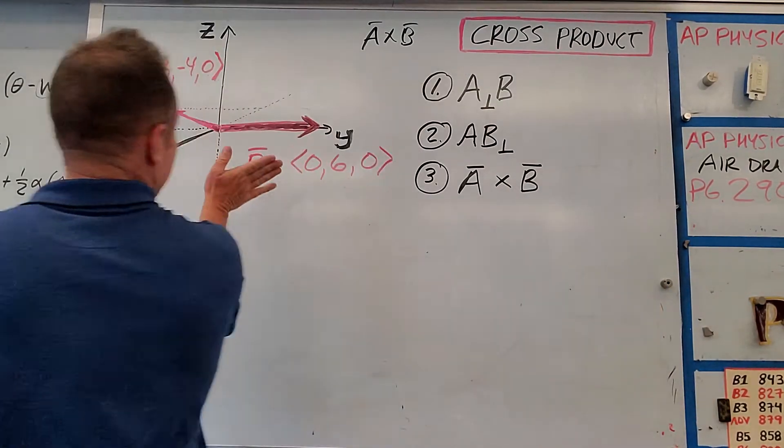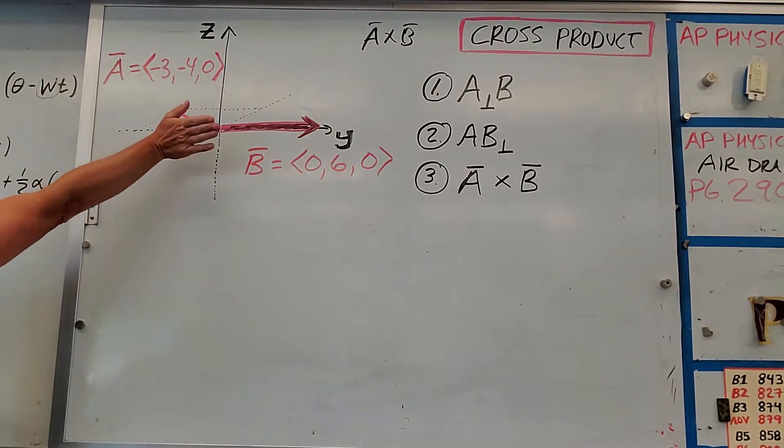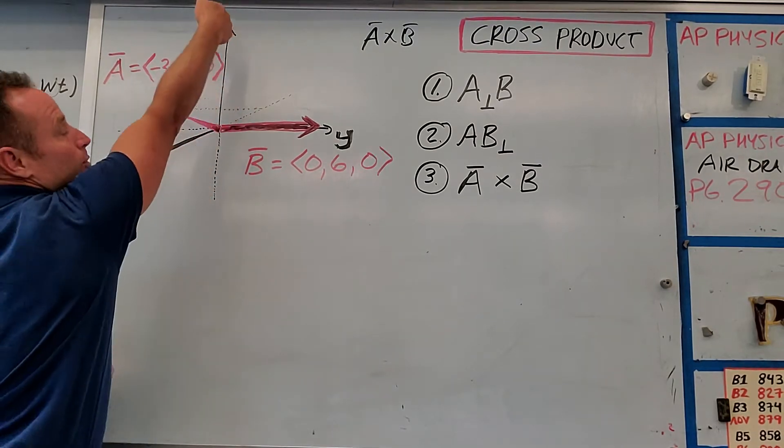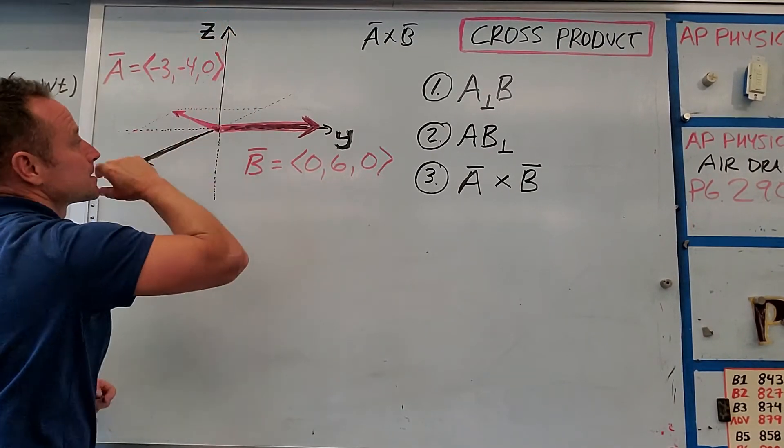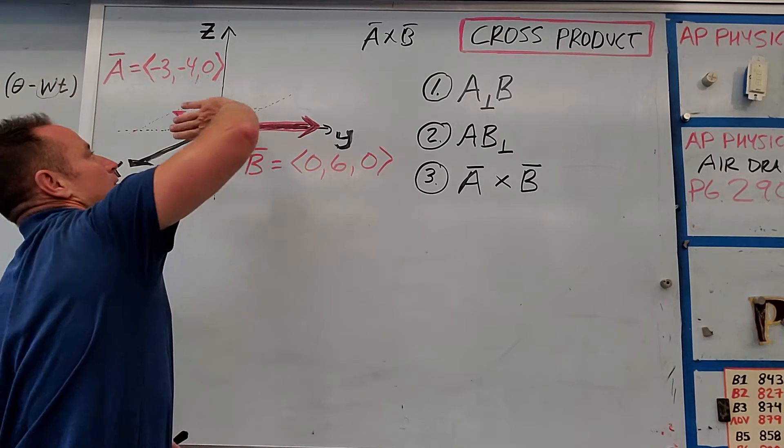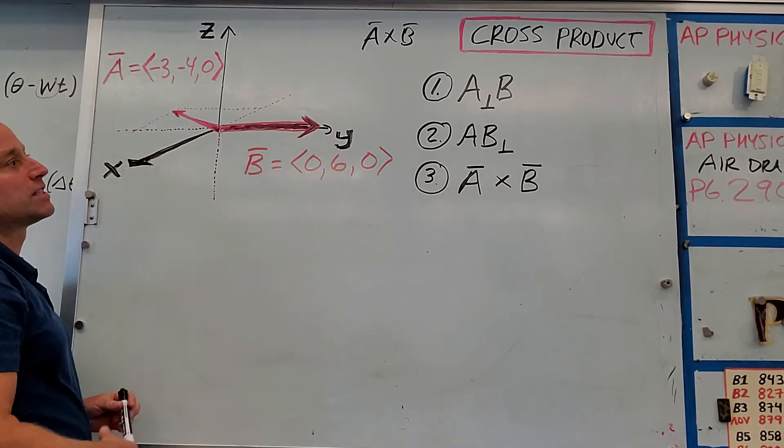Notice if you were doing B cross A, you would start with B and fold it into A, and then that would point up along the positive Z axis. So again, since we're doing A cross B, it's going to point along the negative Z.